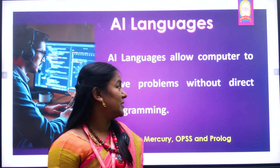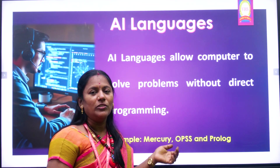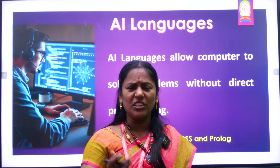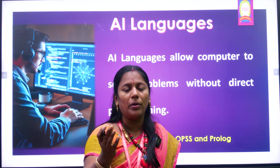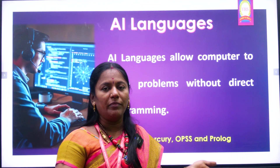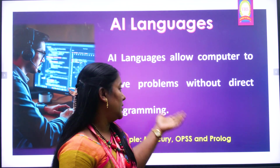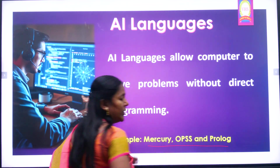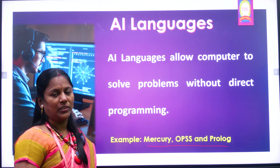Next, we have AI languages. AI language allows the computer to direct programming — the user only needs to identify the problem and what is to be done, and the program will be generated automatically. Examples of AI languages are Mercury, Oops, and Prolog.